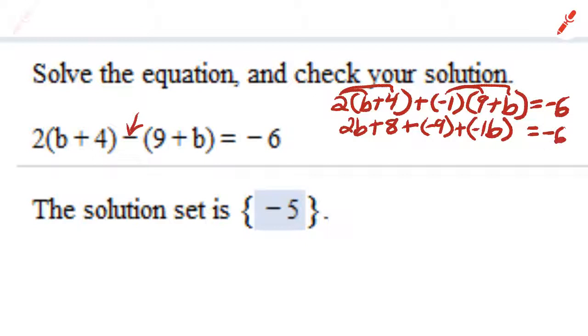Now I'm going to rearrange the terms so that like terms are next to each other. The 2b terms are like terms, and the two number terms are like terms. In other words, they're alike. So 2b plus negative 1b plus 8 plus negative 9 equals negative 6.